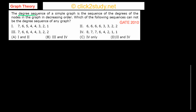There is something called the degree sequence of a simple graph. It is the sequence of the degrees of the nodes in the graph in decreasing order. This sounds a little abstract, so we'll see what it means with an example first.